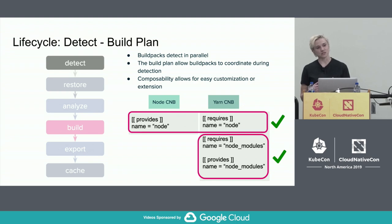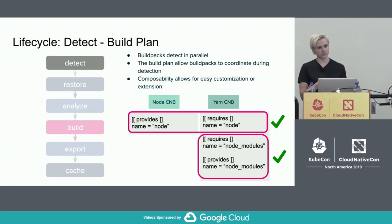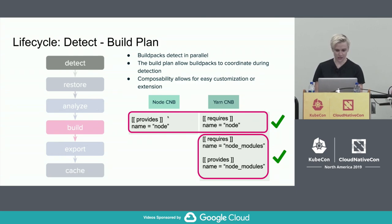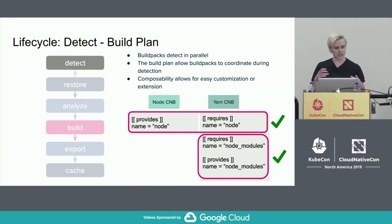Detection happens in parallel for performance, but we still want buildpacks to collaborate, since one buildpack might need a dependency from an upstream buildpack. This is facilitated with a concept called the build plan. As buildpacks detect, they can write into the build plan dependencies that they either provide or require. After detection runs on all buildpacks, the detector finds a build plan where all provides match requires — the first group where that is true is selected, and those buildpacks run.